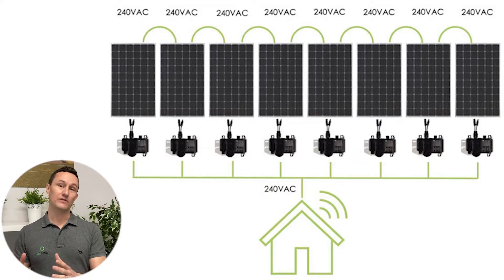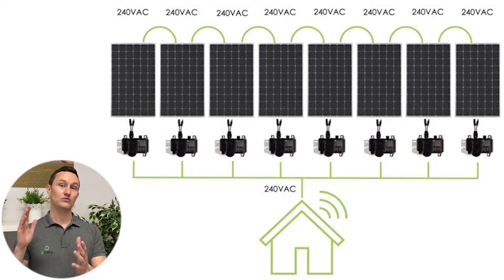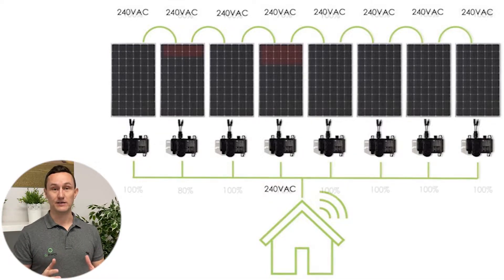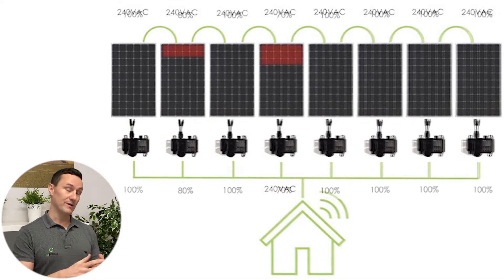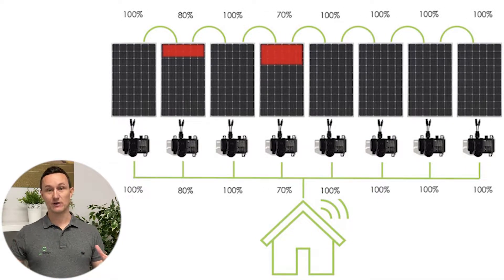A microinverter or a power optimizer is different in that the panels will operate completely independently. So if one panel has some shade or some debris, that panel will be affected, but the rest of the panels on that same roof area won't be. You might be thinking, why wouldn't I just use a microinverter or a power optimizer for my roof? It seems like a much better thing to do.